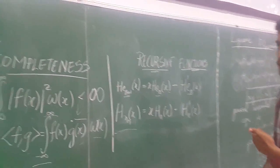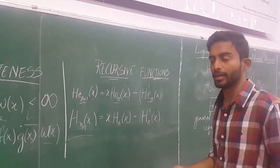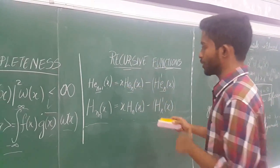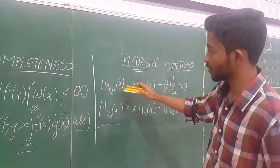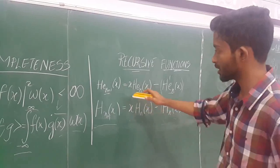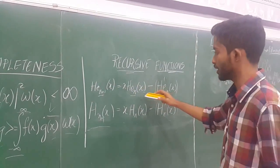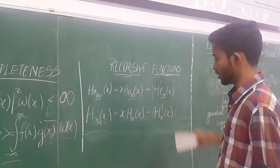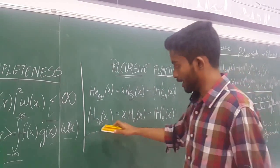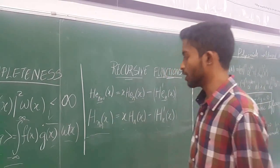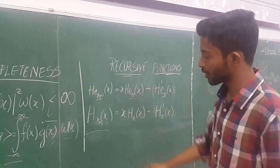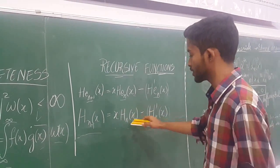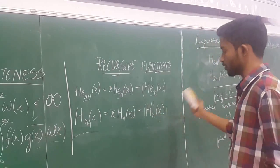Hermite polynomials are recursive, satisfying recurrence relations. The recurrence relation for probabilistic Hermite polynomials is: H_e(n+1)(x) = x × H_en(x) - H_en'(x). And for physicist Hermite polynomials, the recurrence relation is: H_(n+1)(x) = x × H_n(x) - H_n'(x).